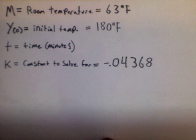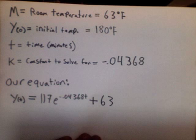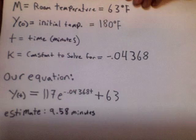Here are the actual values: room temperature was 63 degrees Fahrenheit, the initial temperature of the liquid was 180 degrees Fahrenheit, and the constant k ended up being negative 0.04368. Using our equation to solve for when it would equal 140 degrees Fahrenheit, we got 9.58 minutes after the tea started brewing.